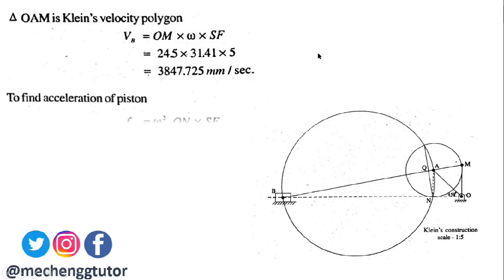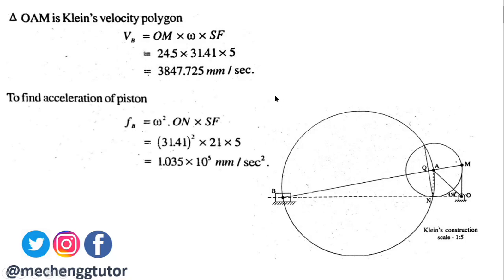To find the acceleration, we focus on polygon OAQN. The acceleration of the slider Fb equals ω² × ON × scale factor. Substituting these values, we get the acceleration as 1.035 × 10⁵ mm/s².